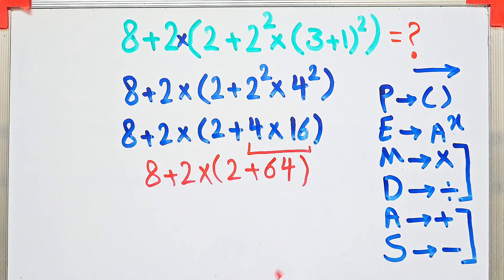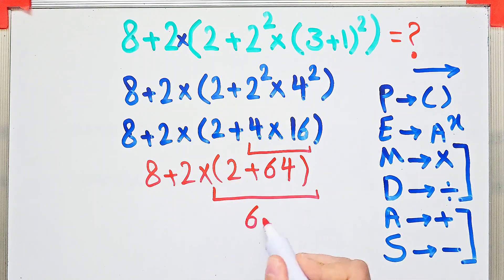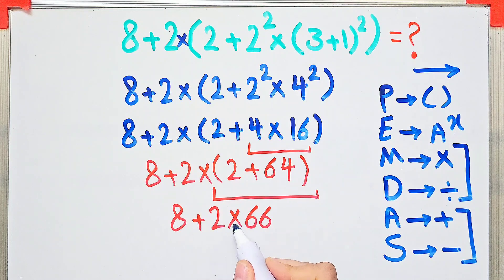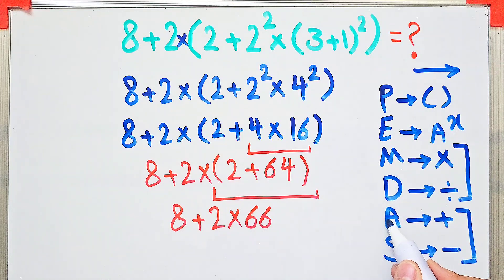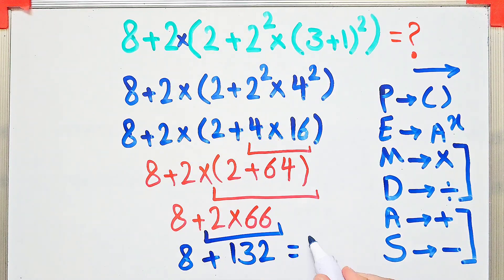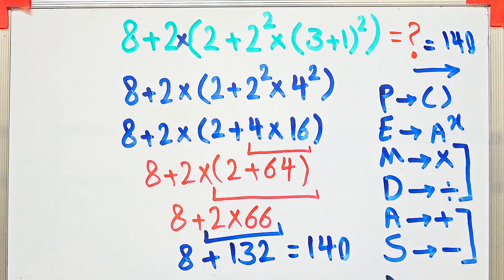Now we have 2 plus 64 inside the parentheses, so 2 plus 64 equals 66. The question becomes 8 plus 2 times 66. We have addition and multiplication, so first we simplify the multiplication because it has higher priority than addition: 2 times 66 equals 132. Now the question is 8 plus 132, which equals 140. The final answer of this question is 140.